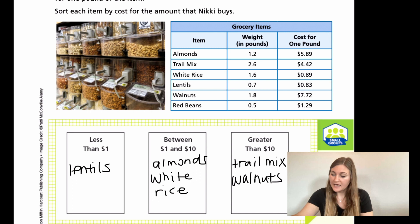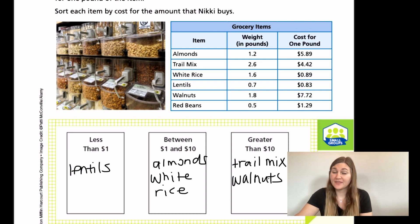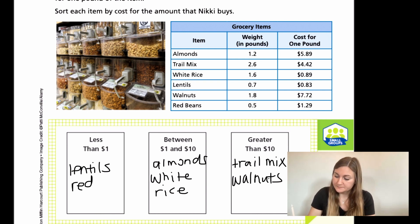The last one is the red beans. We're going to find half of the cost. We have $1.29 and we only need about half of that, so half of $1.29 is definitely going to be less than $1. The red beans go in the less than $1 section.